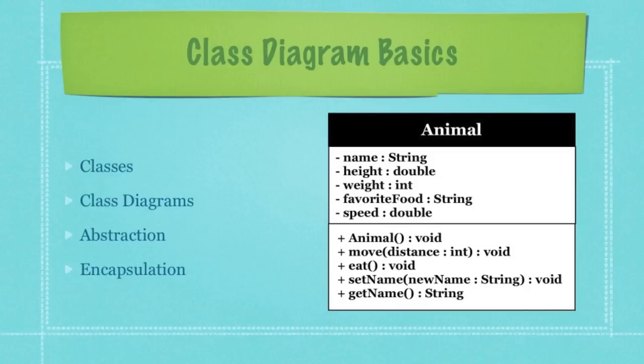Classes just describe the types of objects that your program is going to use, and class diagrams are going to describe those classes and how they relate. Each object that is created from a class — a blueprint, which a class is often referred to as — is known as an instance, or simply an object of that class.